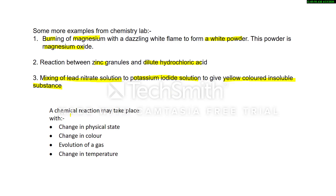When a chemical reaction takes place, certain observable changes occur. A chemical reaction may involve a change in physical state. For example, in the third reaction, lead nitrate is an aqueous solution and potassium iodide is also an aqueous solution, yet they form a yellow-colored insoluble solid — a precipitate. So the physical state changes from liquid to solid.